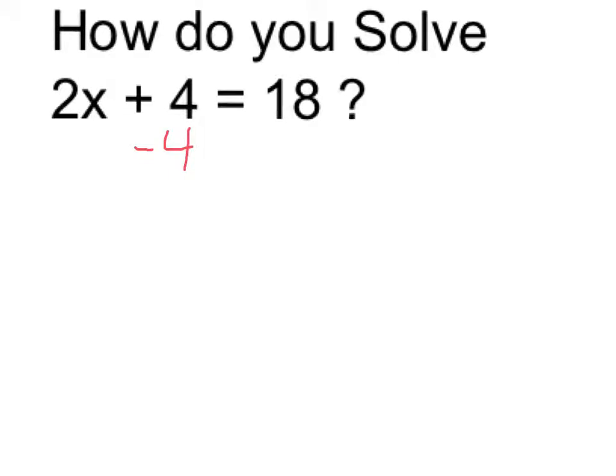So I'm going to subtract 4 on the left side to get rid of it, and then to balance the equation, I have to subtract 4 over here as well. Left side, the plus 4 and minus 4 cancel. On the right side, 18 minus 4 is equal to 14.